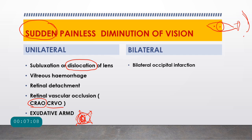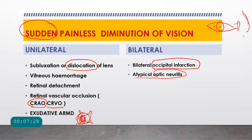For causes of sudden painless bilateral diminution of vision: occipital infarction — a stroke affecting both occipital lobes — can cause bilateral vision loss. Atypical optic neuritis, unlike typical optic neuritis (which is painful and usually unilateral), presents without pain and can affect both eyes, placing it in this category.